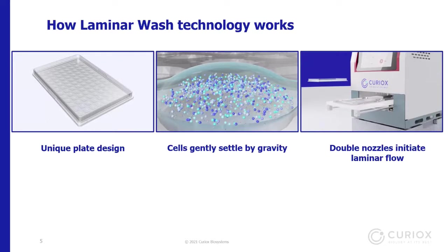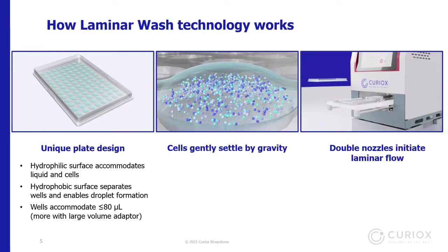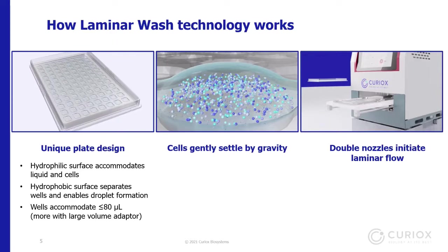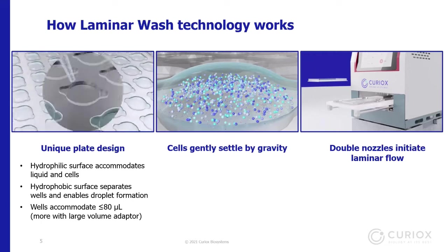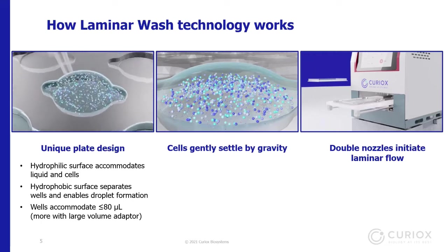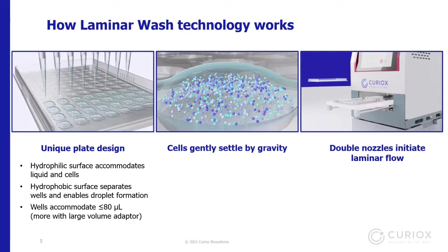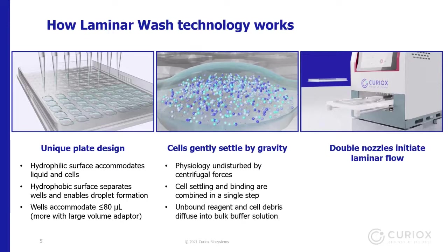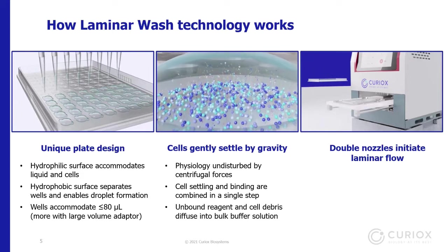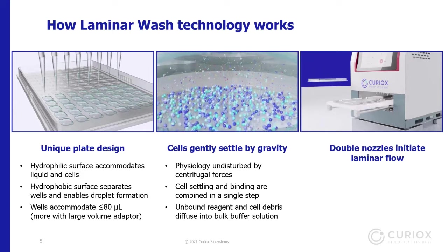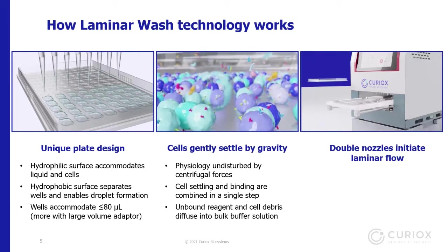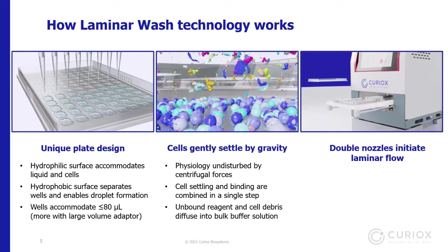The laminar wash plate is made up of 96 hydrophilic wells surrounded by a hydrophobic surface, which allows droplets to form without physical walls. The max volume per well is about 80 microliters, with attachments to increase capacity for incubation. You pipette your cells with antibodies using a single or multi-channel pipette, and then the cells incubate with the antibodies while settling by gravity to the bottom.